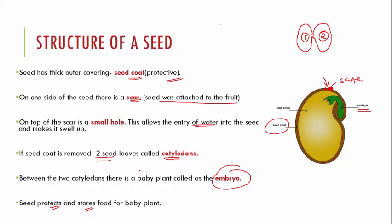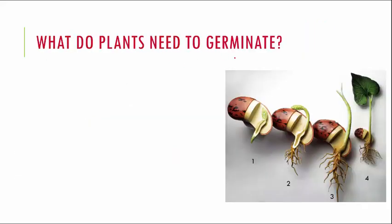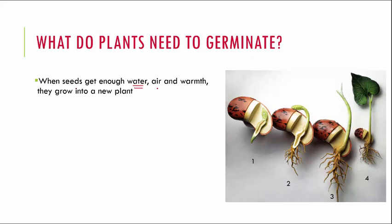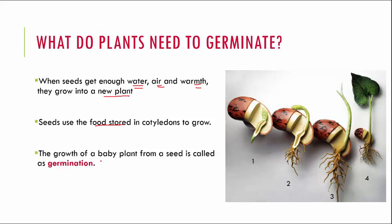Now let us see what germination is — how seeds germinate to give rise to a plant. When seeds get enough water, air, and warmth, they grow into a new plant. Even if one of these is missing, they will not germinate. Seeds use food stored in the cotyledons to grow. The growth of the baby plant from a seed is called germination. Once the baby plant starts growing, it is called a seedling.